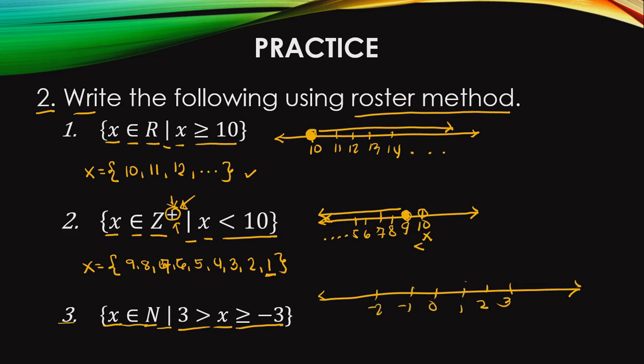So we stop at negative 3 and identify which numbers satisfy the conditions. Is 3 included if x is less than 3? Look at the opening of the inequality — where it's closed is the smaller value, where it opens is the larger value. So for less than 3, is 3 included? No. We start at 2.